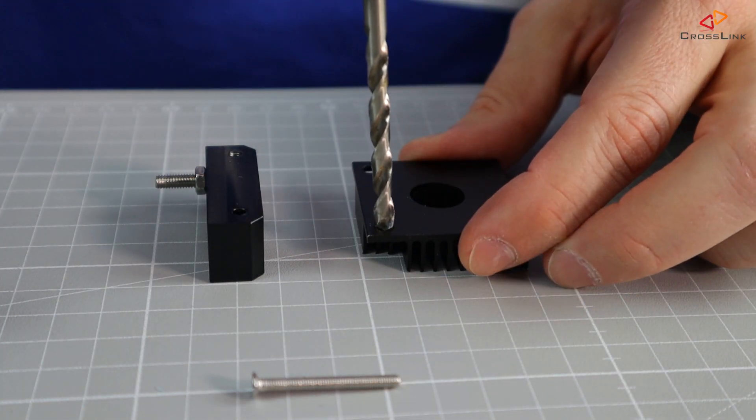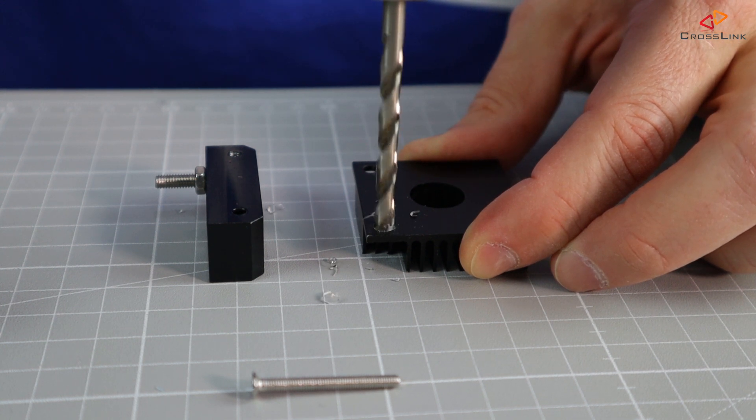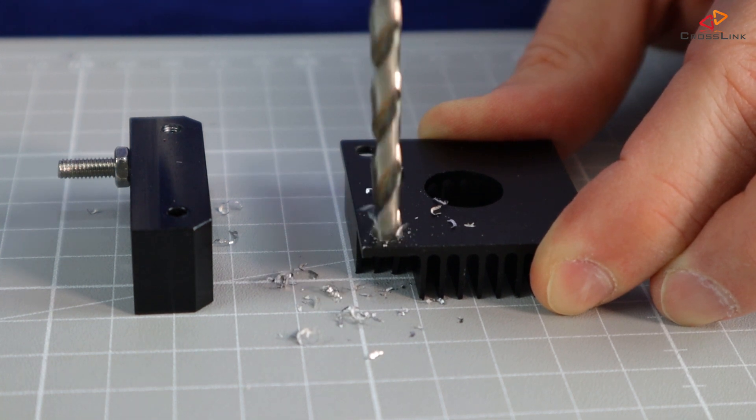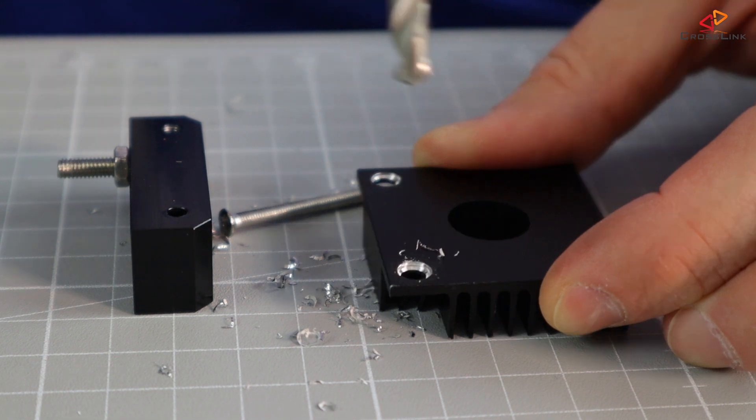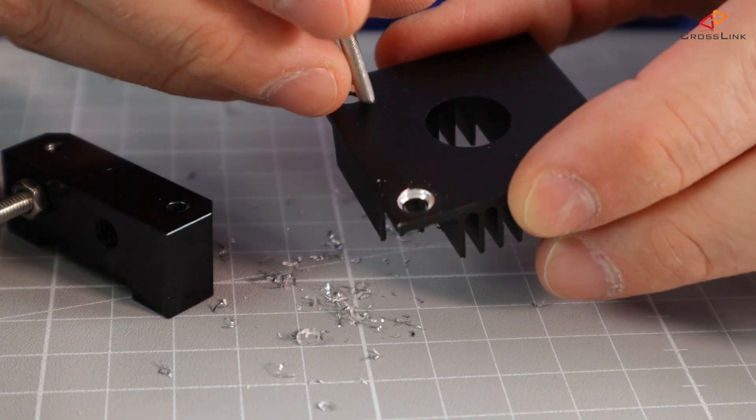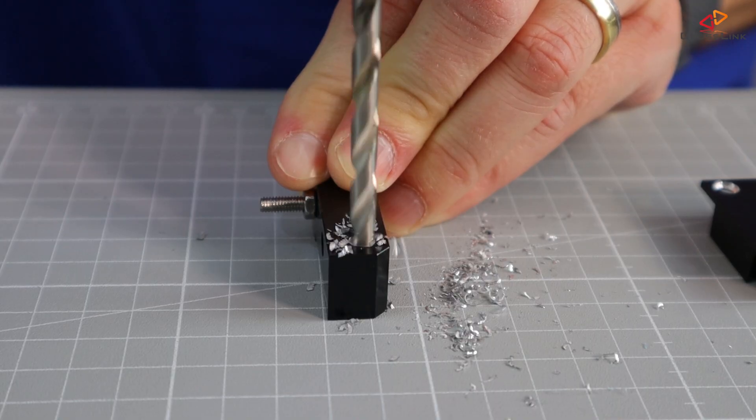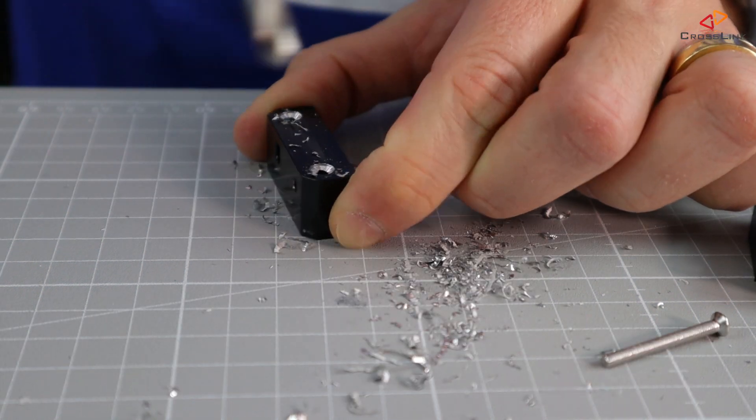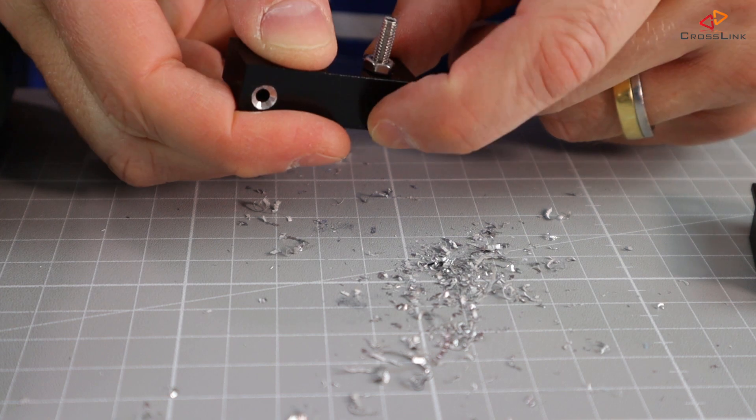Then we need to sink the screw holes on both the extruder block and the cooling block's back side, so our countersunk screw fits nice and flush in there. Be careful when sinking the holes on the cooling block because there is just about 2mm of material thickness, so make sure you do this in several small iterations until you reach the point where the countersunk screw head fits in nice and flush.